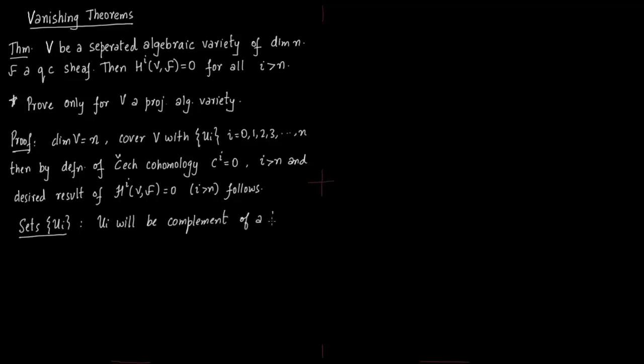The idea is how do you find these sets U_i. These U_i are nothing but complements of hyperplanes. Each set U_i is a complement of a hyperplane H_i, where i equals 0, 1, 2, 3, all the way to n. We have hyperplanes H_0, H_1, H_2, all the way to H_n, and none of these hyperplanes meet V. So V intersection H_i is a null set. We can now see that the complements of these hyperplanes will cover V, since none of these hyperplanes meet V.